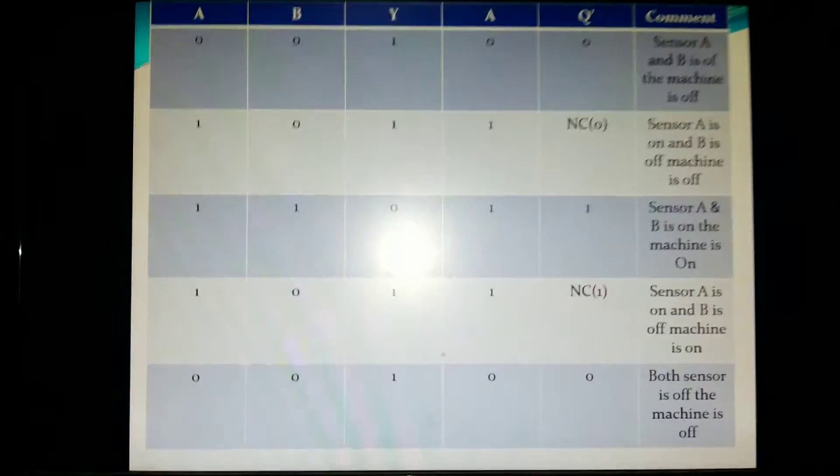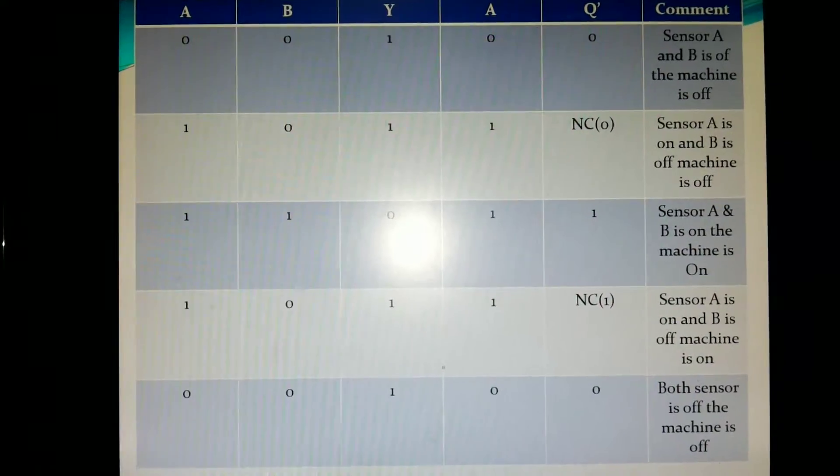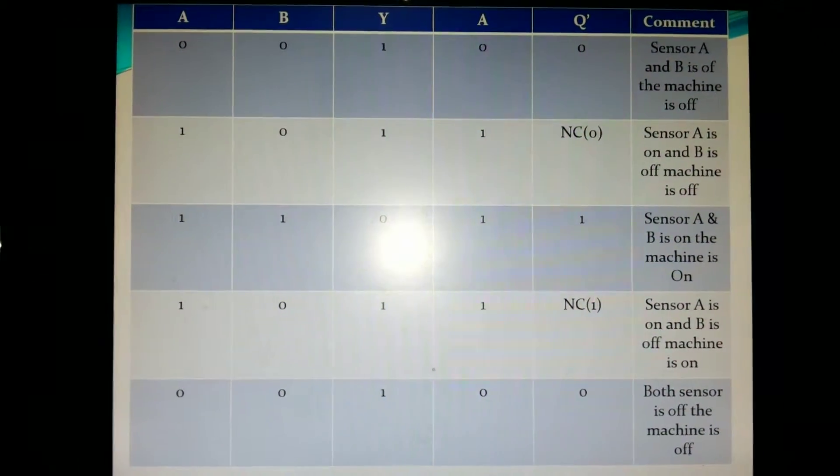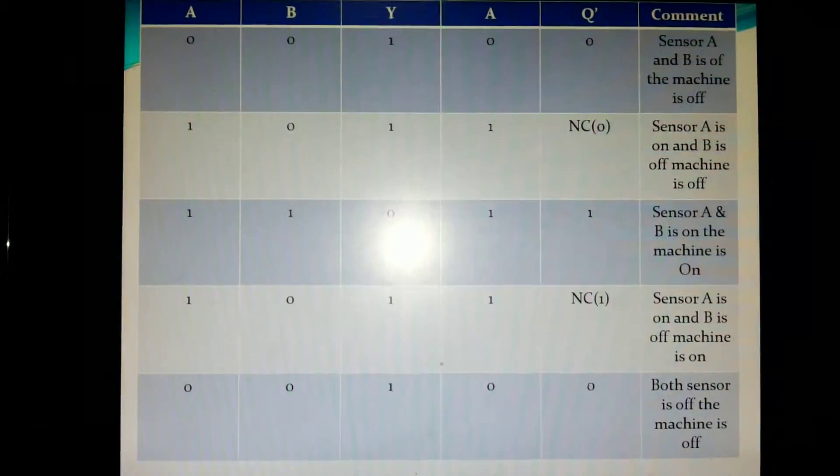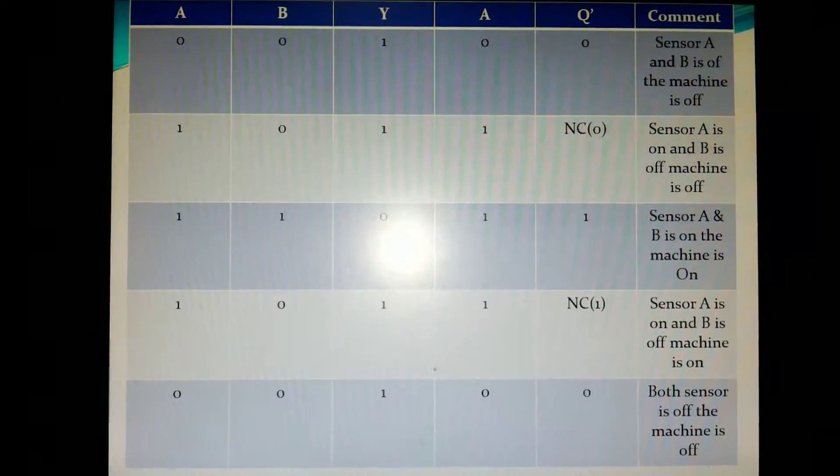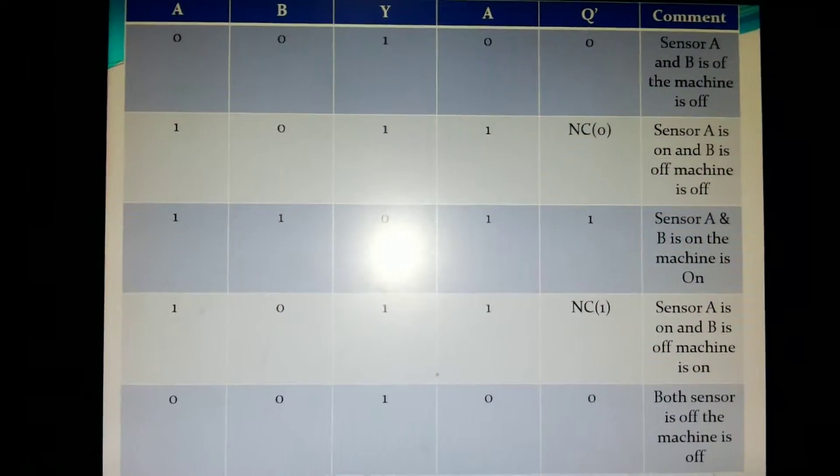This is the truth table of the total system. First, you can see the Y input. Y output gives the input from A and B. When there is 0, 0, the output is 1.